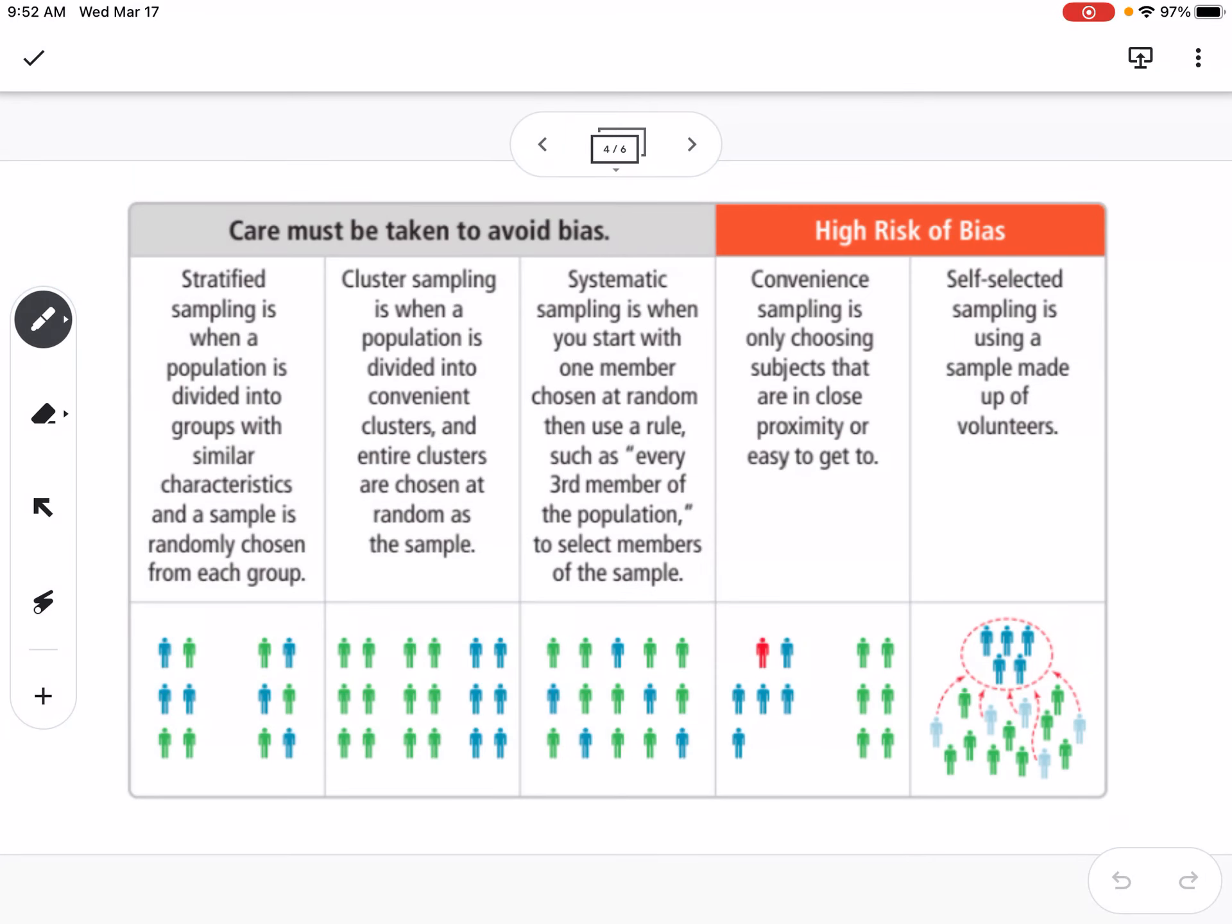We have to be careful in how we sample in order to avoid bias. This is a chart that talks about our different types of sampling and whether or not it's high risk for bias. First one is stratified sampling. That's where you divide your population into groups with similar characteristics, and then a sample is randomly chosen from each group.